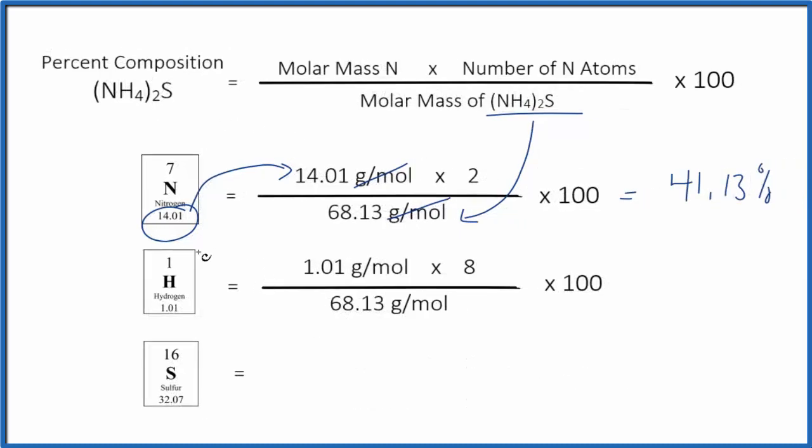We'll do the hydrogen the same way. We take the molar mass of hydrogen, multiply by the number of hydrogen atoms. We have 2 times 4, which gives us 8 hydrogen atoms.